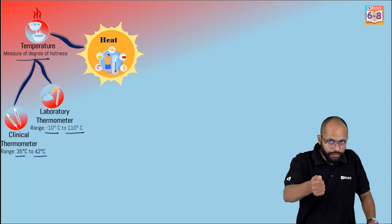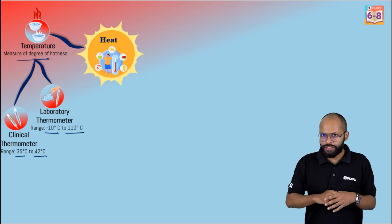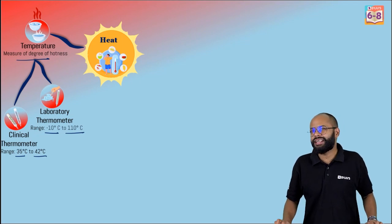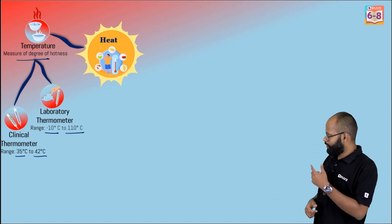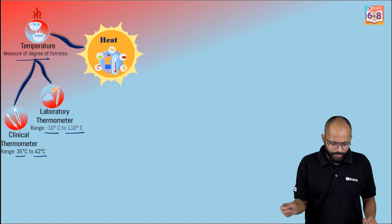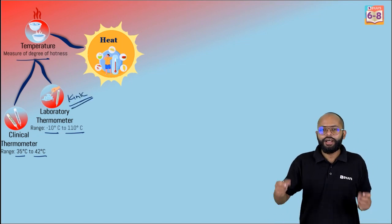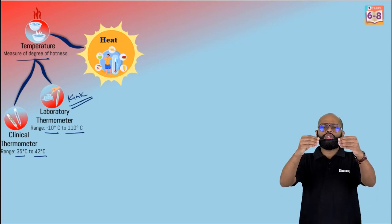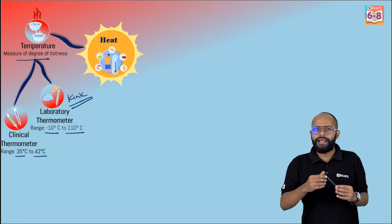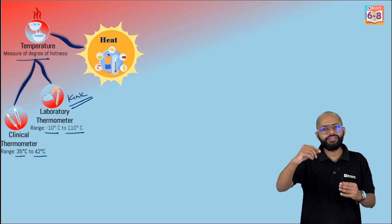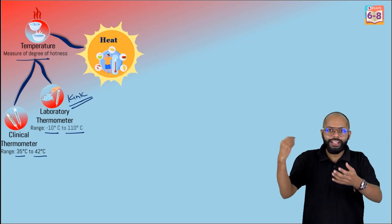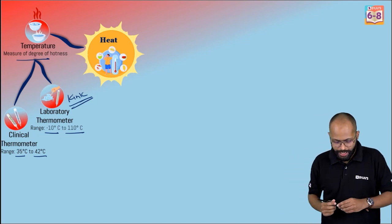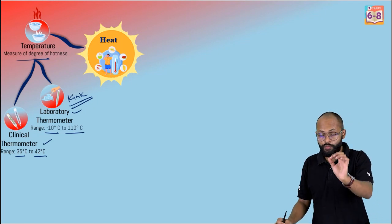Apart from range, what was the biggest difference between clinical and laboratory thermometers? Remember the kink? There is a kink in a clinical thermometer. When you measure your temperature under your tongue and then take it out, you don't want the mercury level to fall — that's why there is a kink; it does not let mercury fall instantly. That's why you have to shake the thermometer before using it to bring the level down.